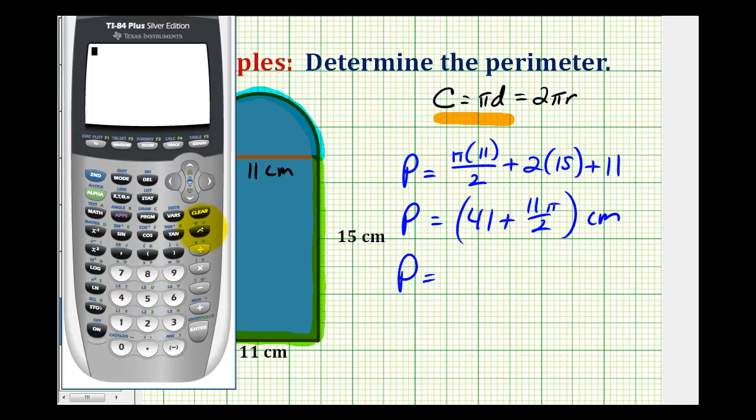So we'll go ahead and use the pi key on this calculator to get a decimal approximation. So we have 41 plus 11 pi over two, or divided by two. So if we press enter.